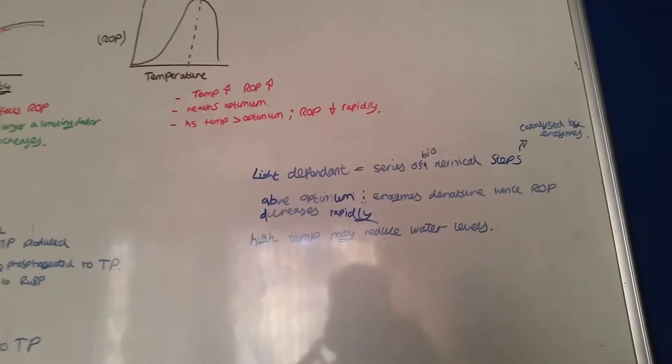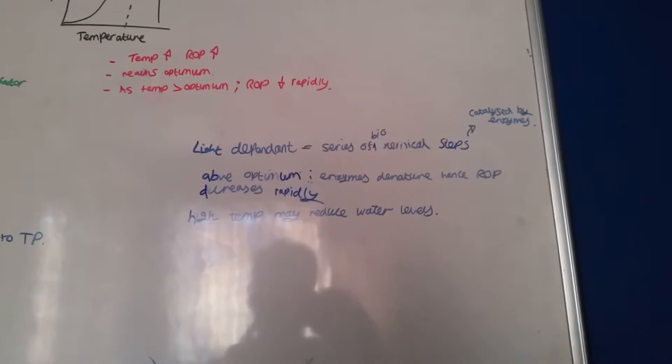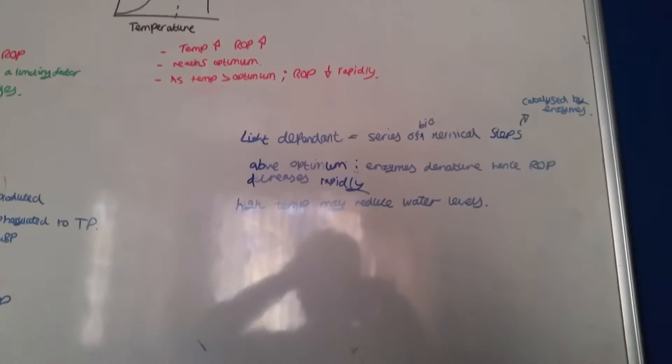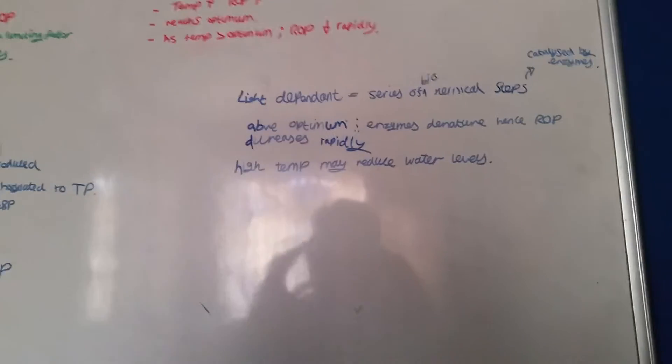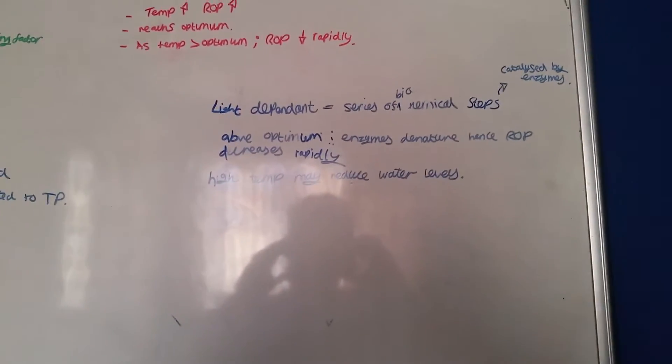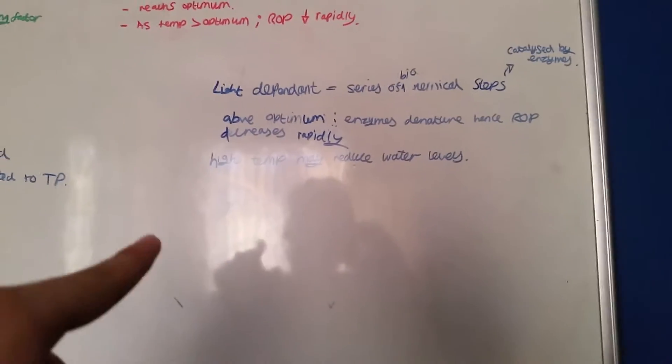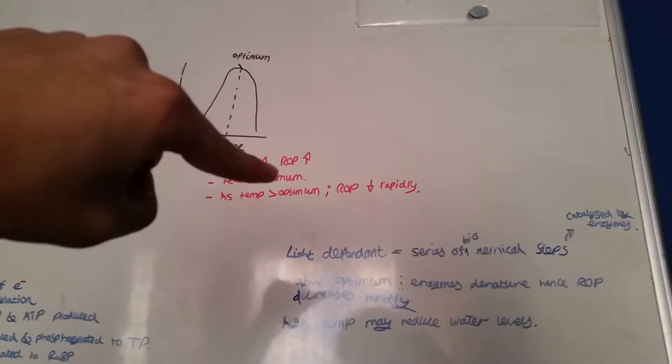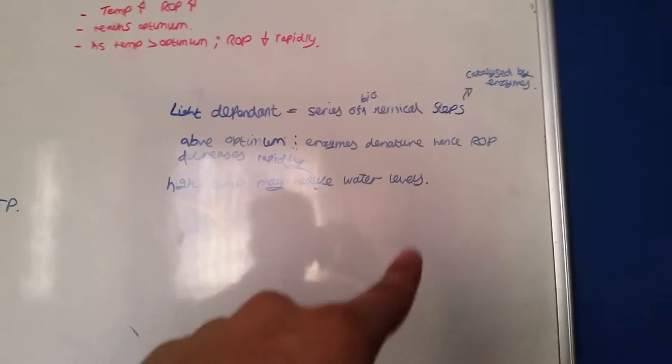With temperature, it's a bit different. So this is affecting the light dependent stage. As this is a series of biochemical steps, it is catalyzed by enzymes. So above the optimum temperature, I know there's a spelling error there, above the optimum temperature, the reason why it plummets rapidly is because the enzymes denature.